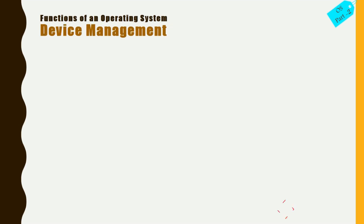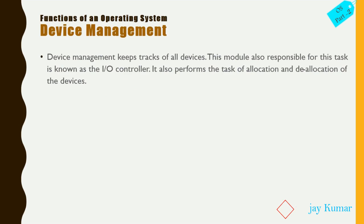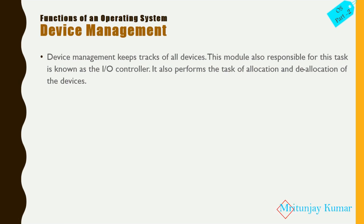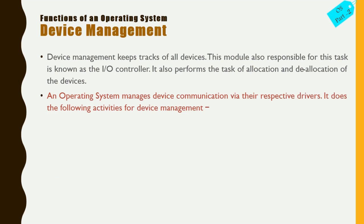Now we'll see device management. Device management keeps track of all devices. This module is also responsible for tasks known as I/O controller — that is, input/output controller — and it also performs the task of allocation and de-allocation of devices. Sometimes we disable a device and sometimes we enable it; this is done by device management itself. The operating system manages device communication via their respective drivers, which we learned about in Chapter 3 on software.